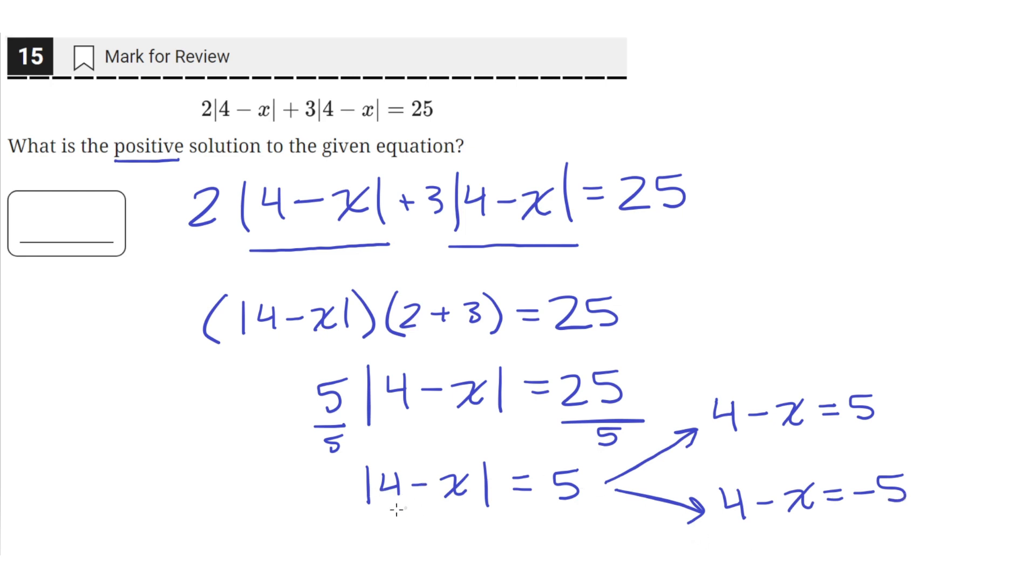When 4 minus x equals 5, this quantity inside the absolute value, and the absolute value of 5 is 5, so the equation will end with 5 equals 5, which satisfies the equation. But when 4 minus x equals negative 5, the absolute value of a negative number is its positive version. So absolute value of negative 5 is 5, then 5 equals 5, and the equation is still true.